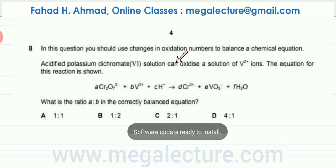Now acidified potassium dichromate(VI) solution can oxidize a solution of V²⁺ ions. The equation for this reaction is shown. What is the ratio of A and B in the correctly balanced equation?